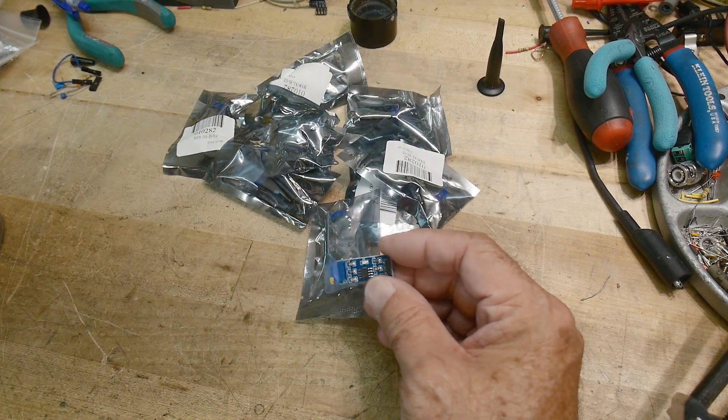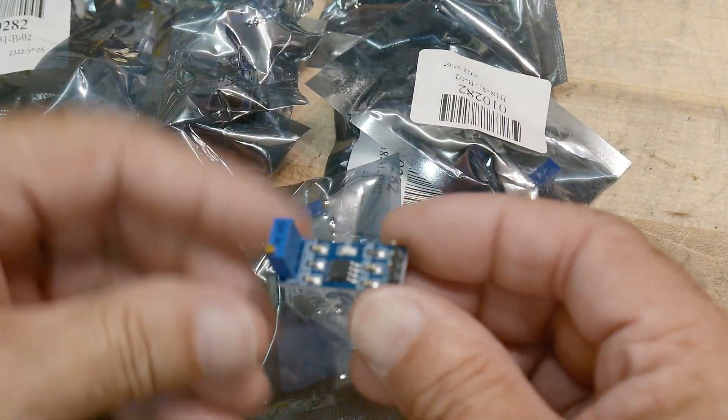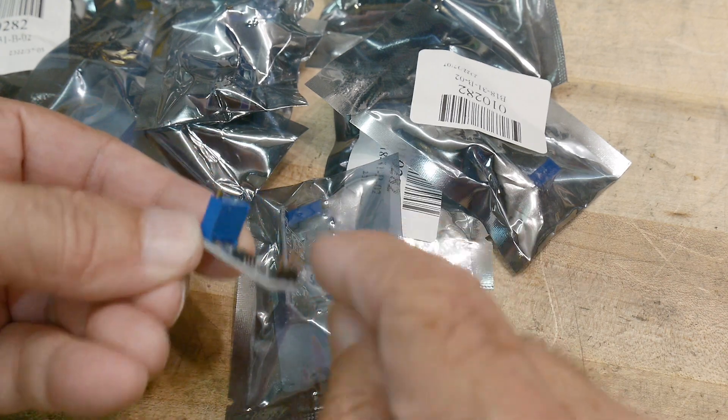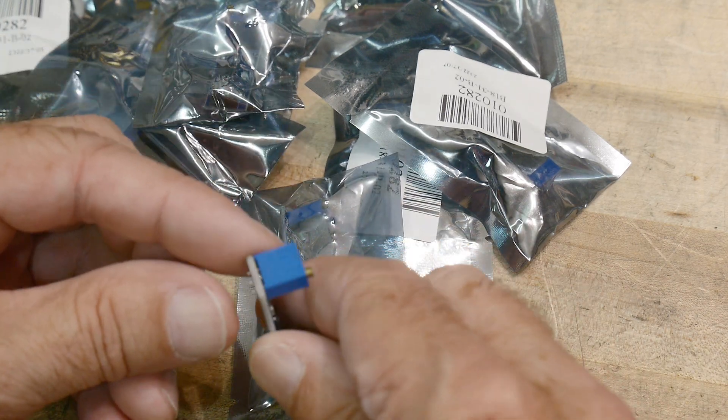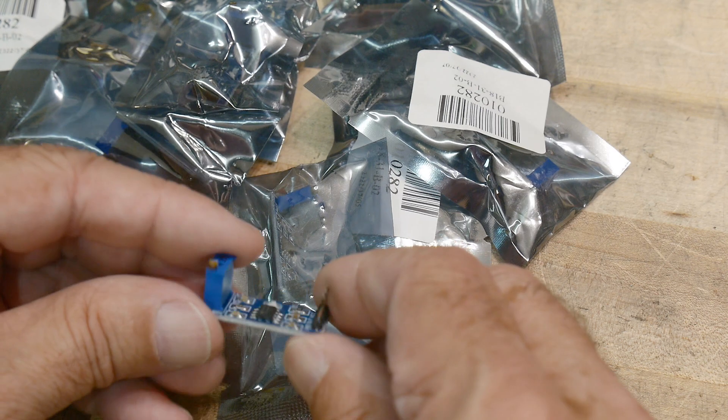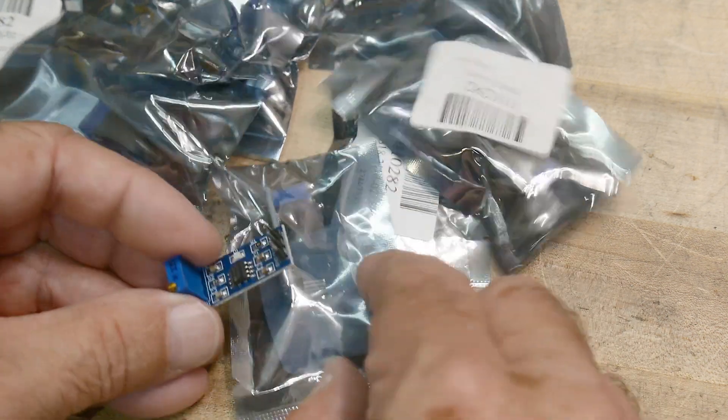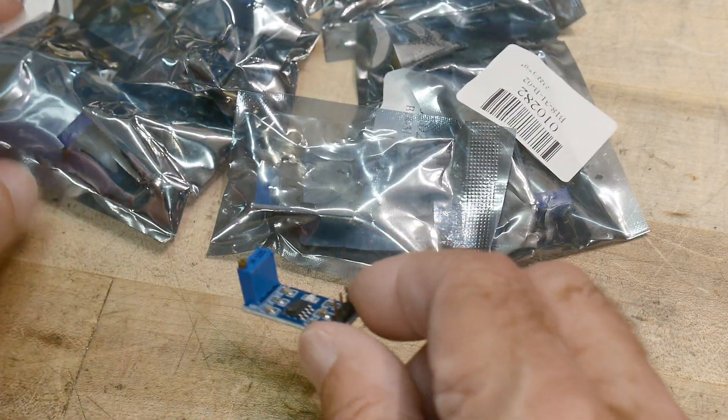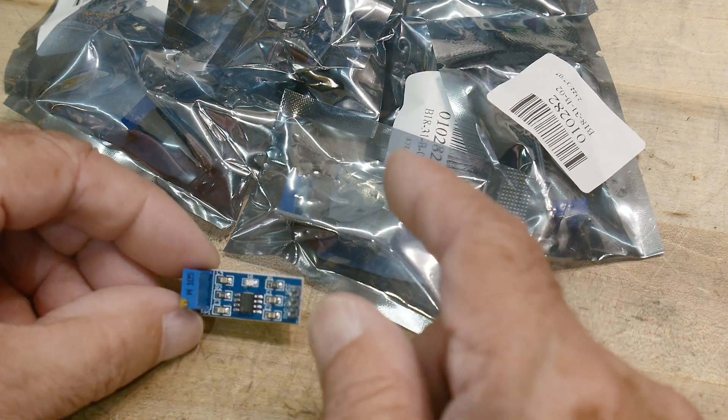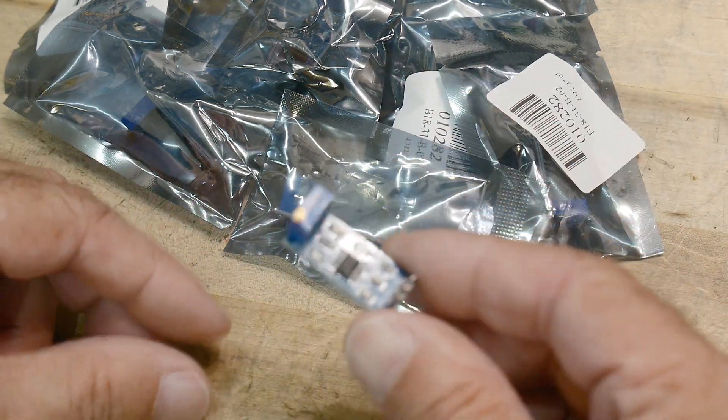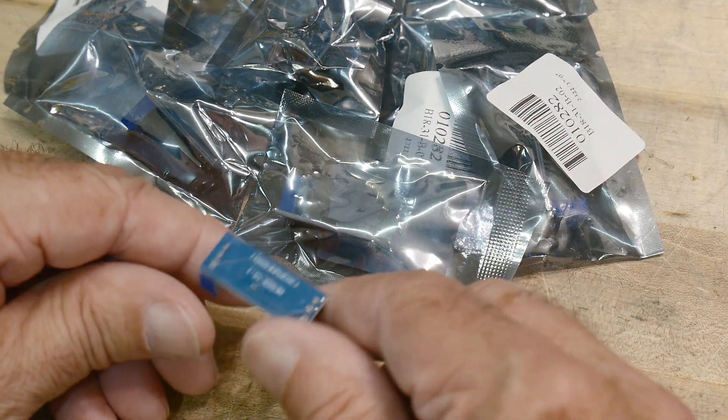These are little 555 modules so if you haven't seen one of these it's a 555 timer and there's a header and there's a potentiometer 10 turn. So what I like to do with these I like to modify them so I bought these 45 cents each. 45 cents for a whole board.